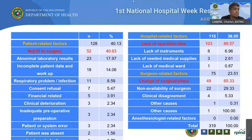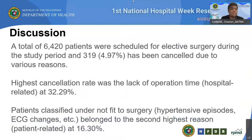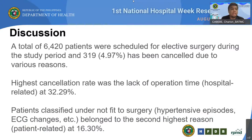A total of 6,420 patients were scheduled for elective surgery during the study period and 319, or 4.97%, had been canceled due to various reasons. The highest cancellation rate was the lack of operation time, which is hospital-related at 32.29%. Patients classified as not fit for surgery — those with hypertensive episode and ECG changes — belong to the second highest reason at 16.30%, which is patient-related.